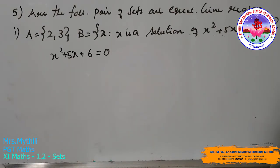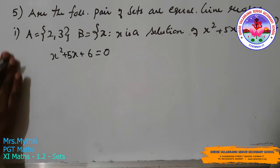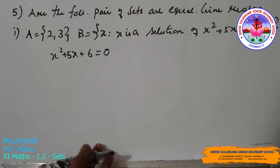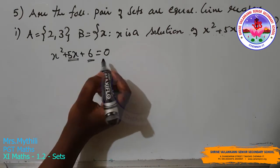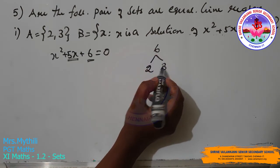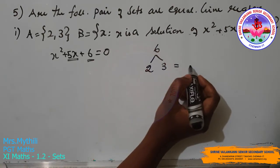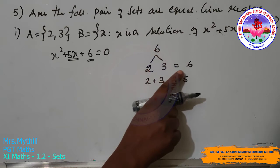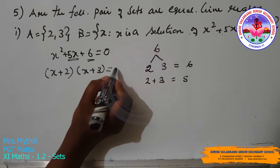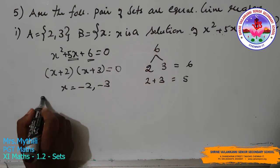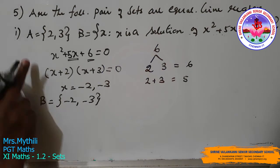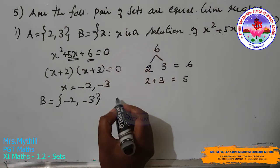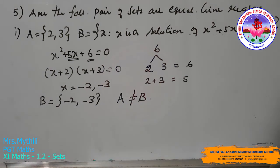Question 5: which of the following pairs of sets are equal? First: A = {2, 3} and B = {x : x is a solution of x² + 5x + 6 = 0}. Factorizing: the sum is 5 and the product is 6, giving factors 2 and 3, so (x + 2)(x + 3) = 0. Thus x = −2 and x = −3, meaning B = {−2, −3}. Since A = {+2, +3} and B = {−2, −3}, A ≠ B.